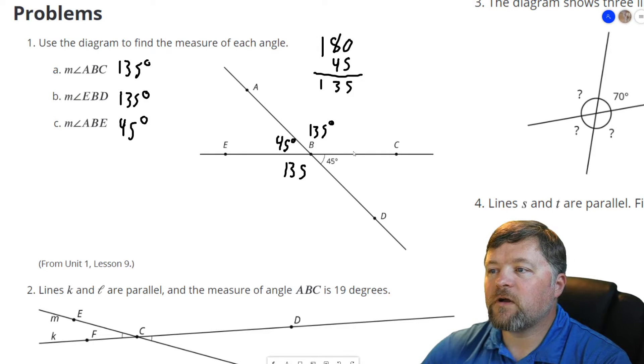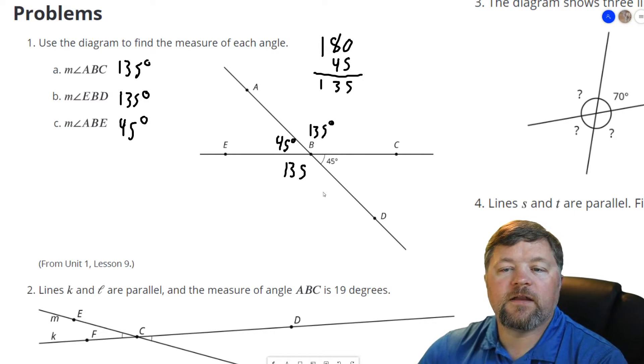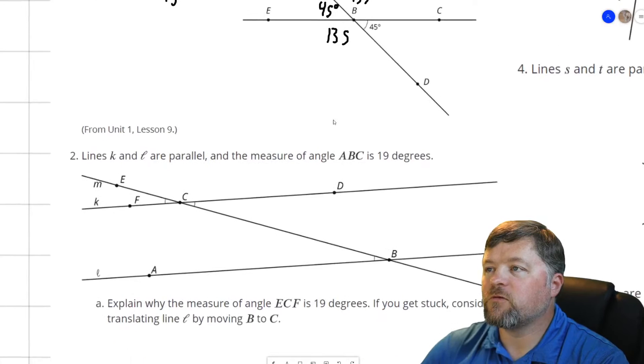So by knowing one angle we can find all four when we have two lines crossing.